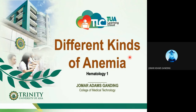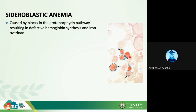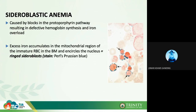Sideroblastic anemia is caused by a blockage in the protoporphyrin pathway, resulting in defective hemoglobin synthesis and iron overload. Unlike iron deficiency anemia where iron is lacking and protoporphyrin accumulates, in sideroblastic anemia the protoporphyrin pathway itself is the problem. Excess iron accumulates in the mitochondrial region of immature RBCs in the bone marrow, encircling the nucleus — these are called ring sideroblasts.